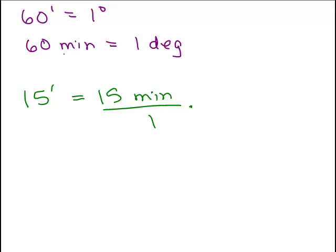And then we do a little conversion factor. Since these are actually the same thing, you can either write 60 minutes over 1 degree or 1 degree over 60 minutes. And that's the same thing as the number 1, since they're equal. So you want to multiply it so the minutes cancel.